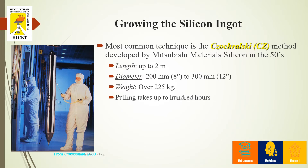The very first step is how to grow the silicon ingot. The most common technique used is the Czochralski method, or CZ method in short. This was developed by Mitsubishi Materials in the 1950s. Initially, they created a silicon ingot of length up to 2 meters, with a diameter of 200 mm, weighing 225 kg, and the pulling process takes up to 100 hours.